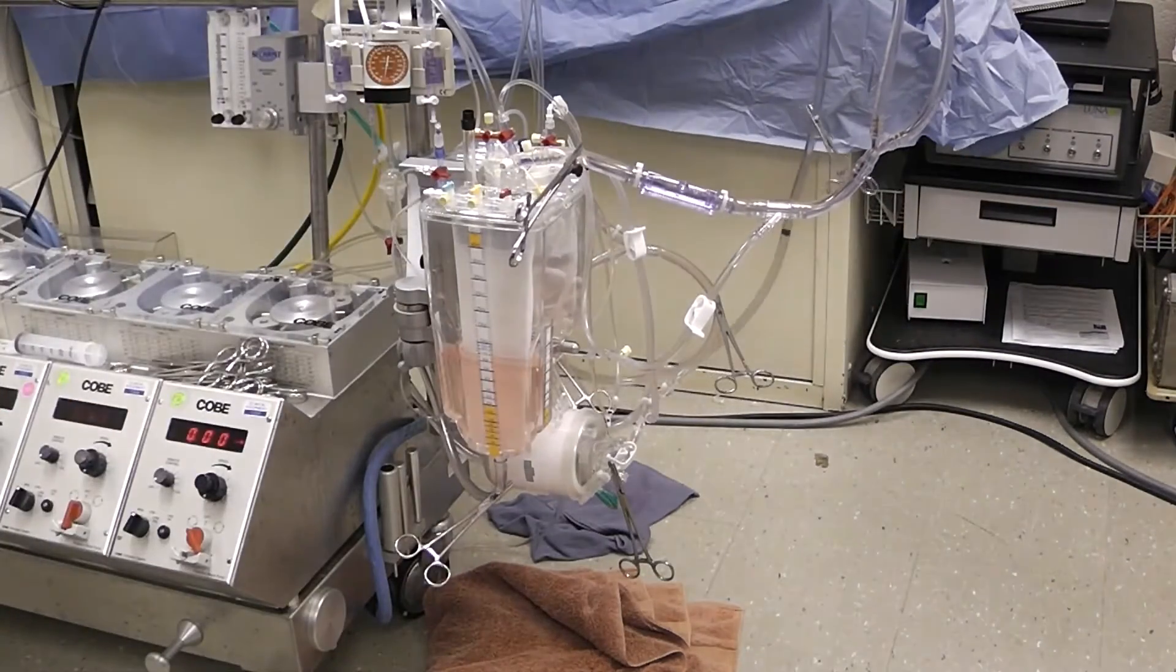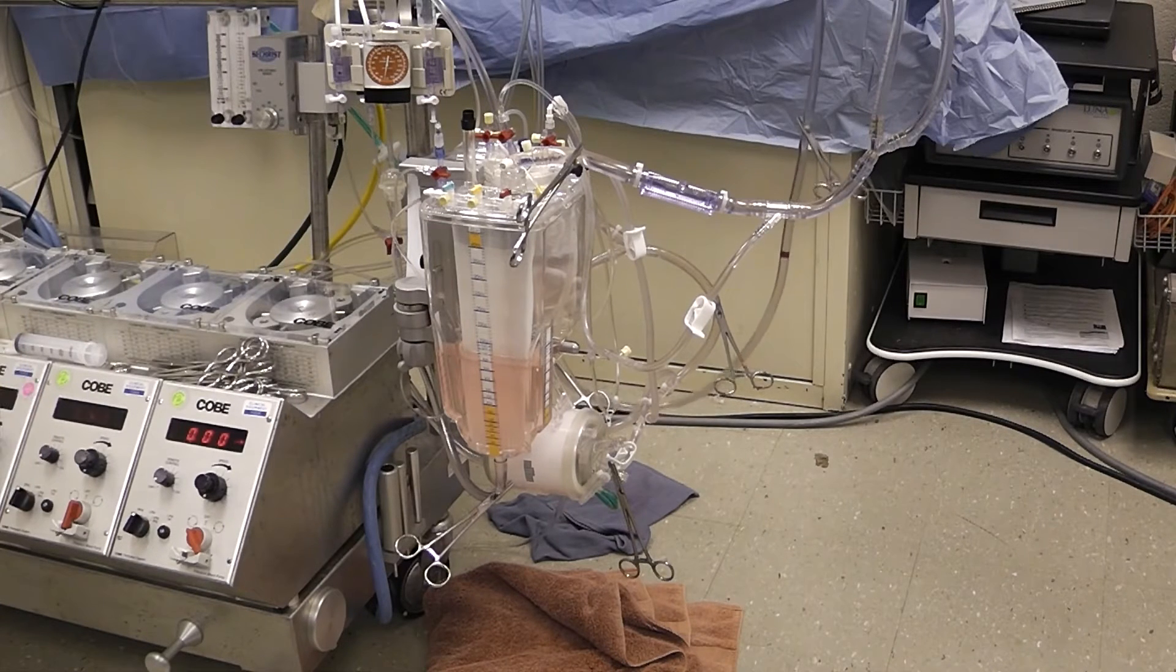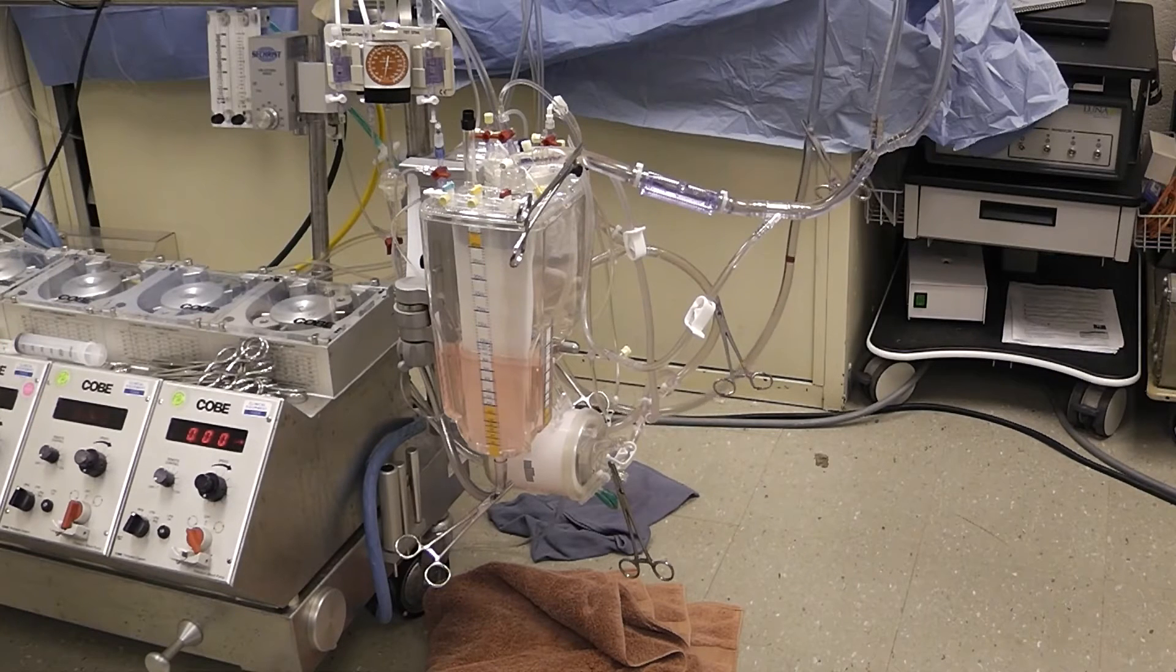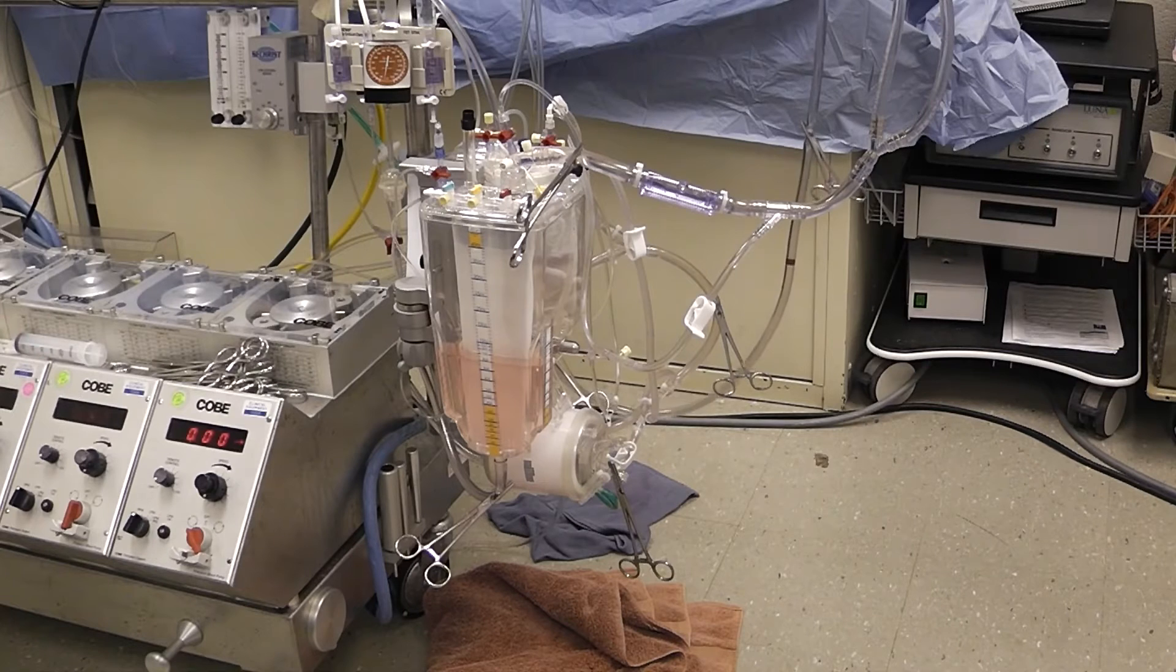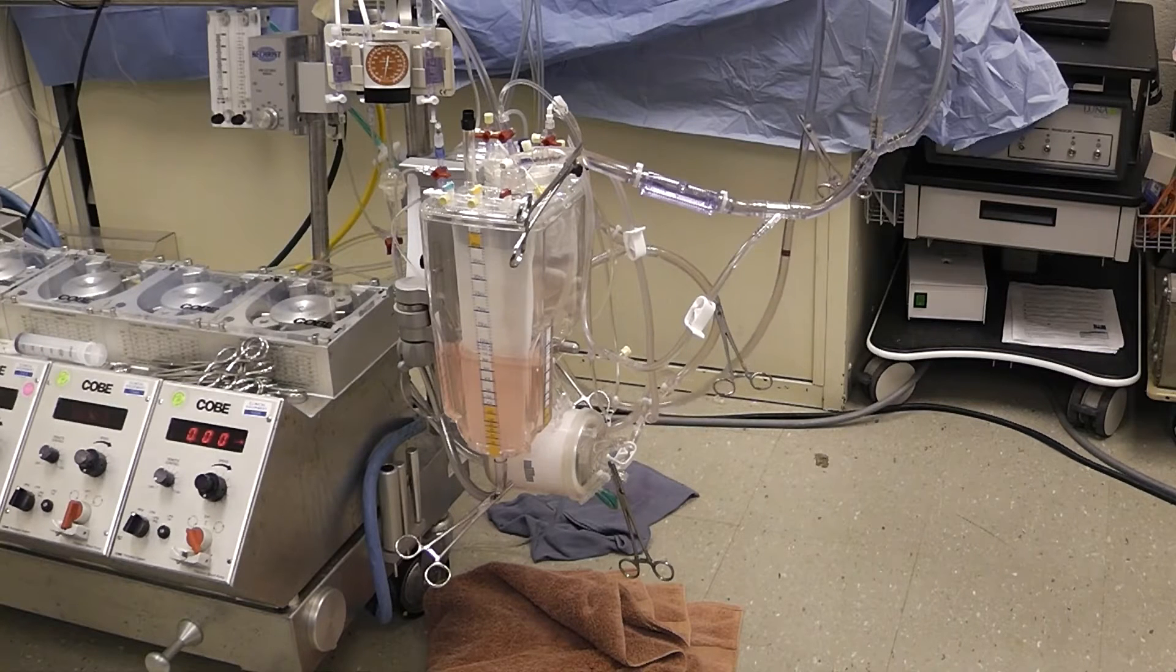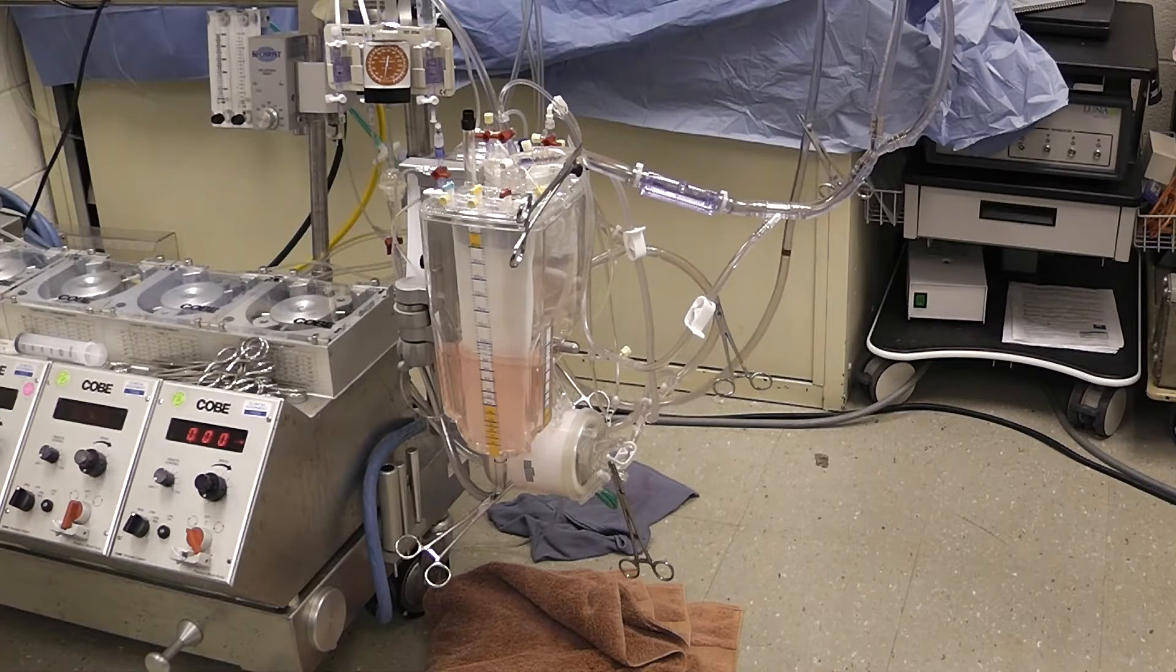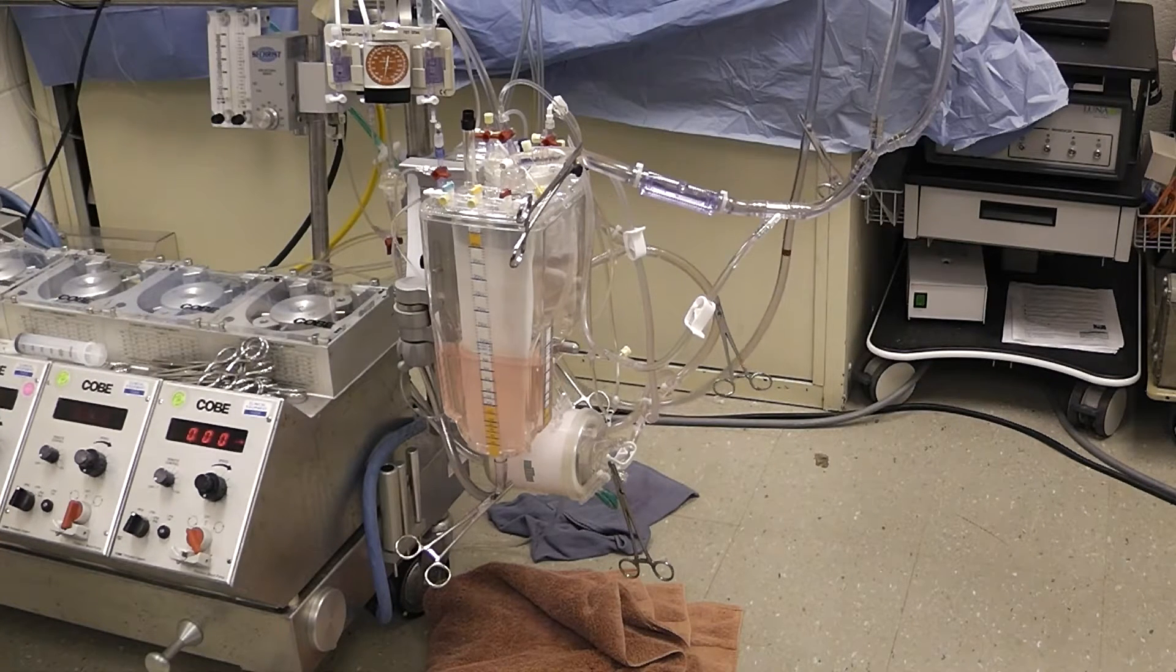We also need to let the surgeon and anesthesiologist know what has occurred and have someone run to the pump room and get us a new pump head. We're also going to need some connectors. We happen to use three-eighths inch line, so we're gonna need two three-eighths to three-eighths inch connectors. We'll also need some alcohol or betadine swabs, a sterile scissors or scalpel, and we'll want some gun ties and a gun as well.